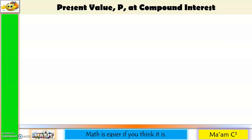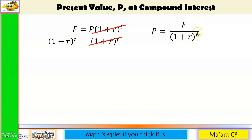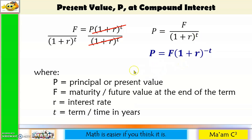Now let us talk about present value P at compound interest. Let us recall our formula for the future value, and from here we are going to derive the formula of P. We divide both sides by the quantity 1 plus R raised to T, so 1 plus R raised to T will be cancelled out. We have P is equal to F divided by 1 plus R raised to T. If we bring this whole expression up, this positive exponent T will become negative. We have the same definitions for P, F, R, and T.